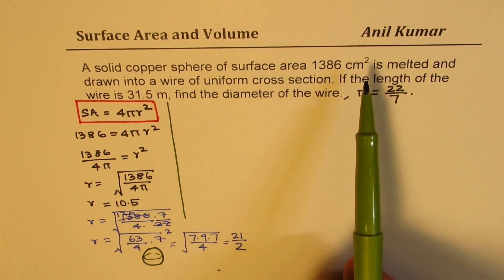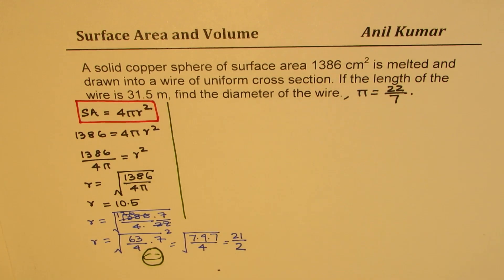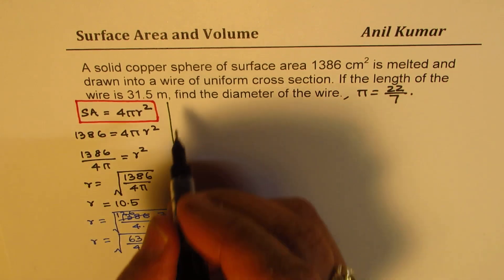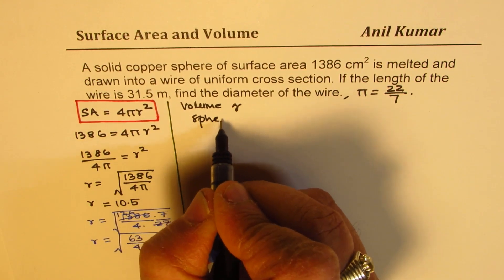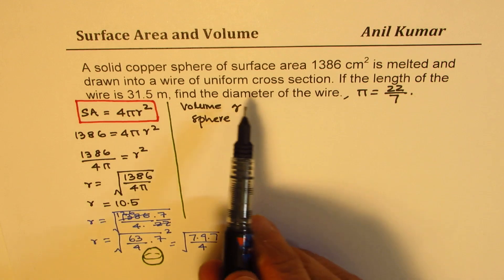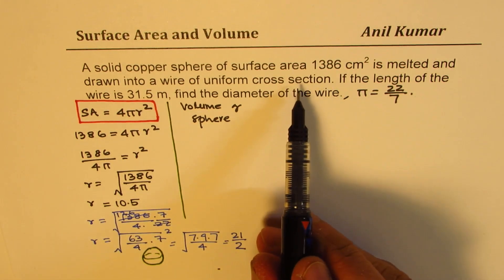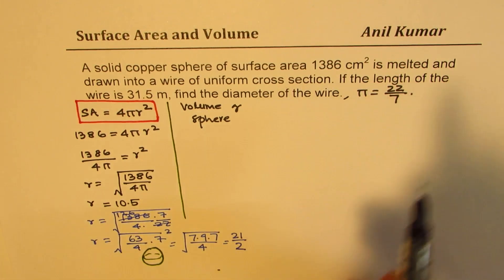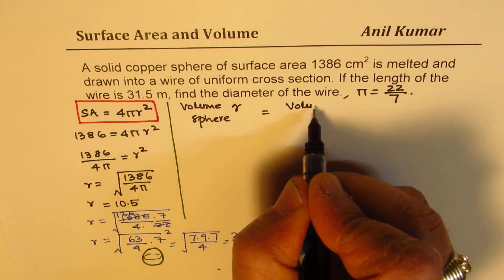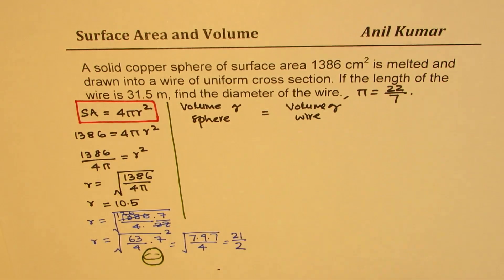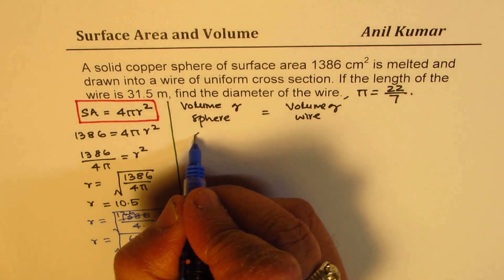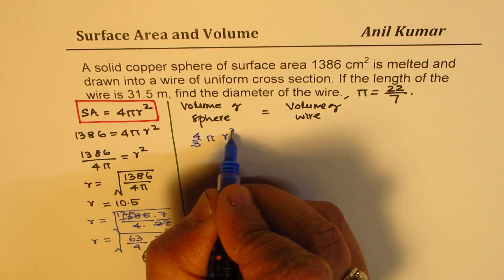Now, when you are melting a sphere, we are really interested in its volume. So we have to find the volume of the sphere. When you draw the wires, we are talking about the volume of the wire. These two volumes should be exactly the same. The formula for volume of a sphere is (4/3)πr³.